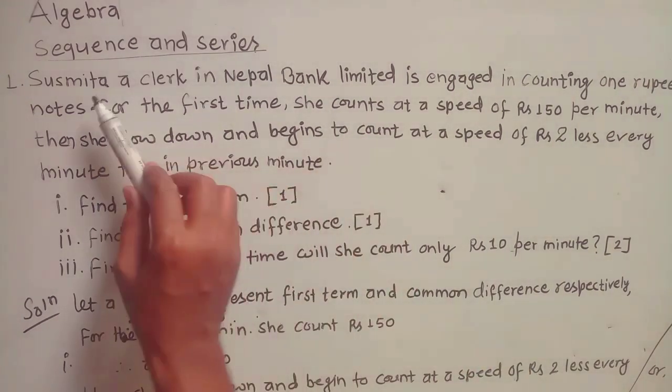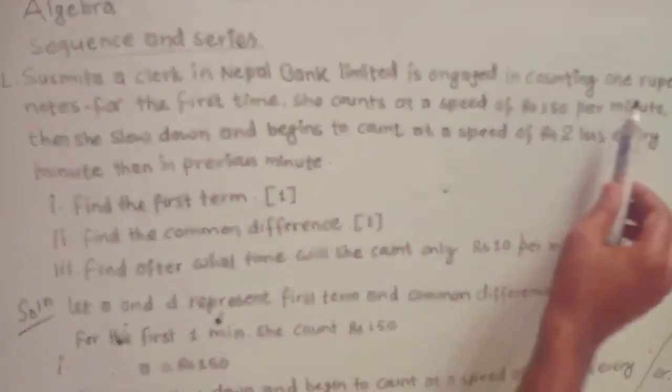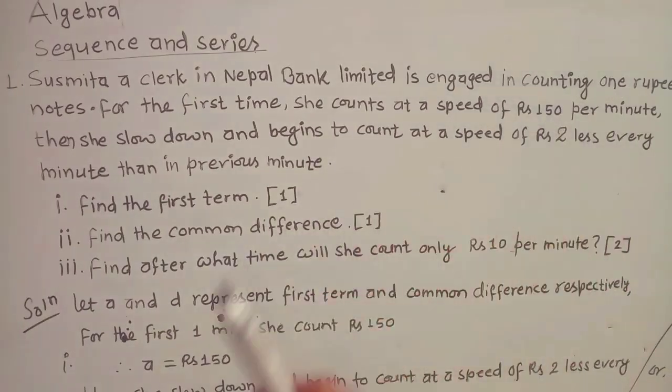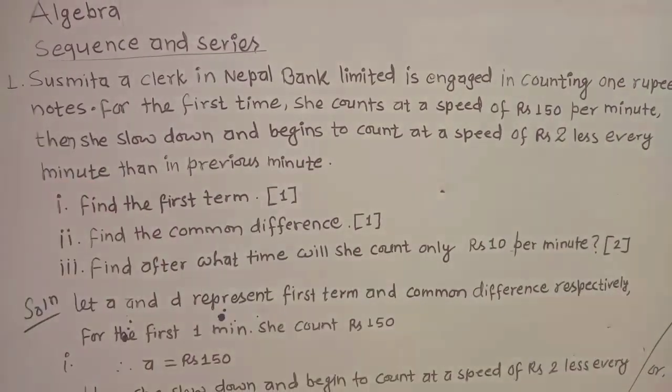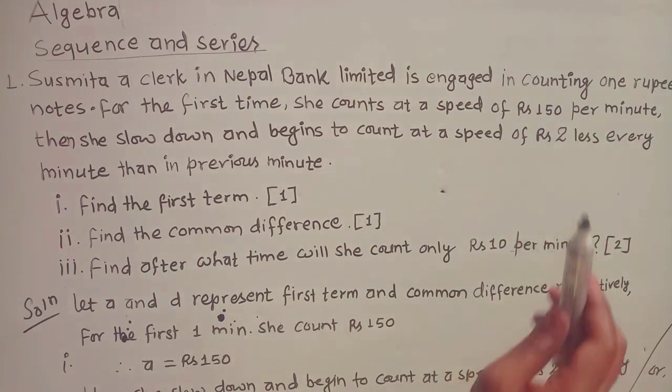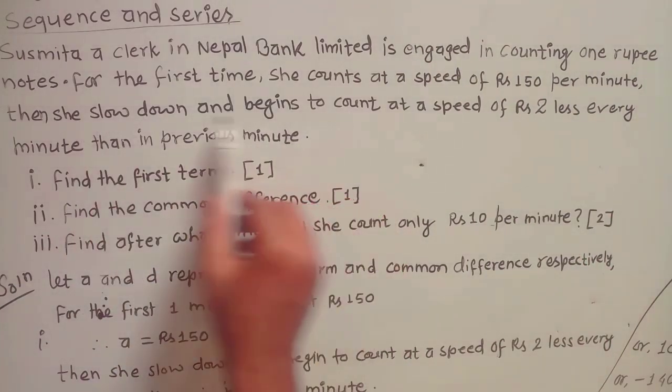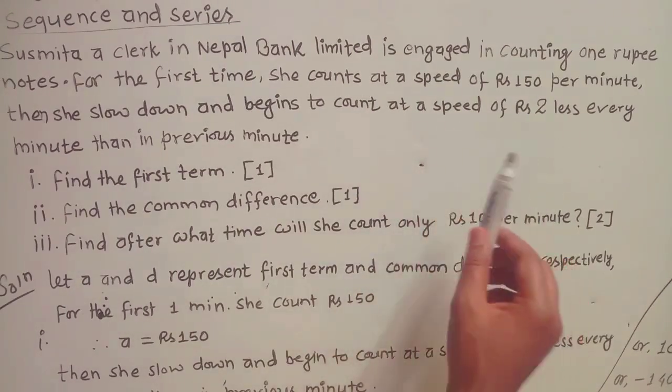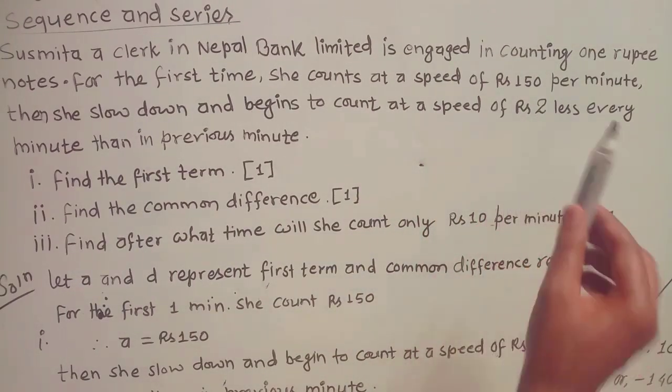The question is: Sushmita Nepal bank ko karmachari ho, Rs ko kaam chai counting 1 rupee notes garni ho. First time she counts at speed of Rs 150 per minute, then the speed becomes slower by Rs 2 per minute each minute.